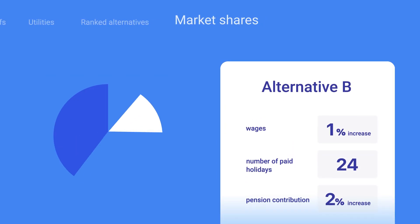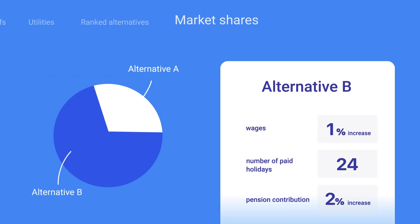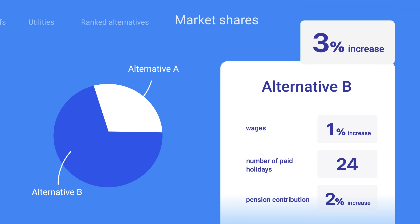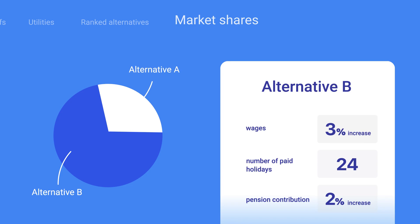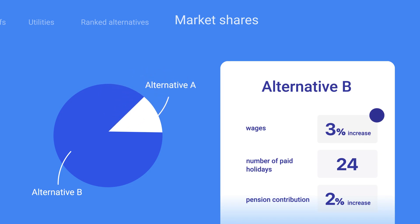We can also see what proportion of our employees would rank each package first, which is sometimes called their market shares. By adjusting the attributes, we can see how the market shares would change and create an even more attractive package overall.